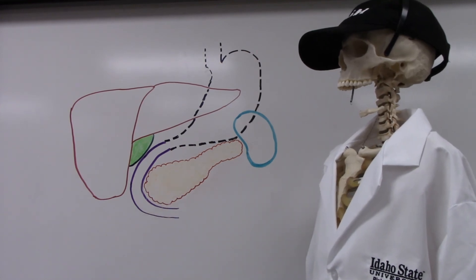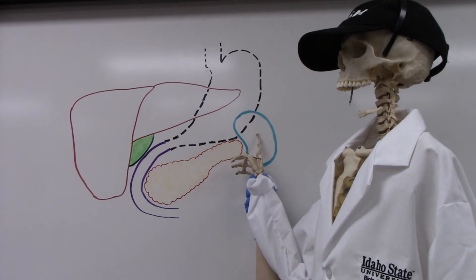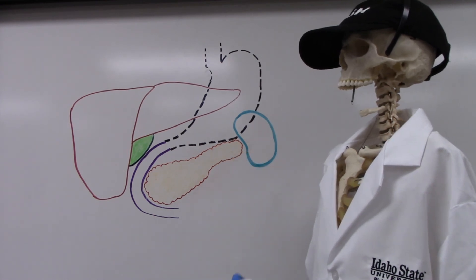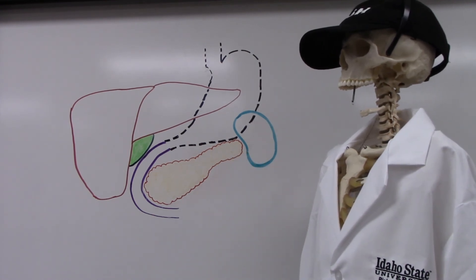Here we have the spleen. The spleen sits posterior in the abdomen and superior to the left kidney. The spleen filters and recycles red blood cells and stores white blood cells.